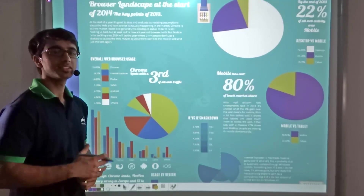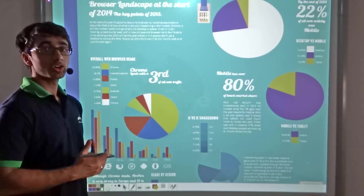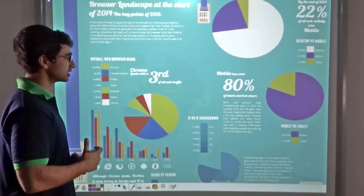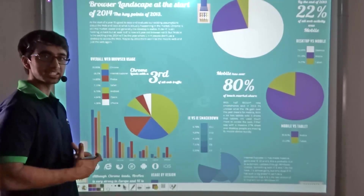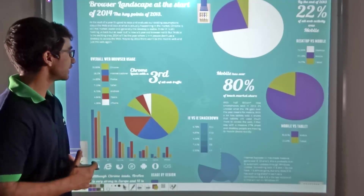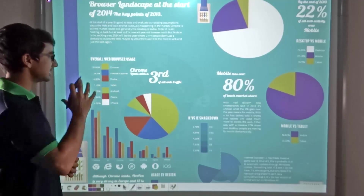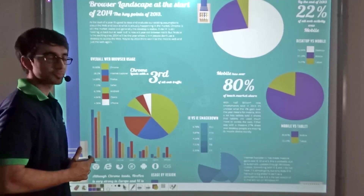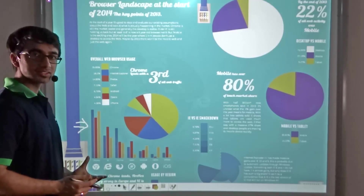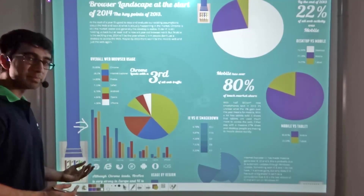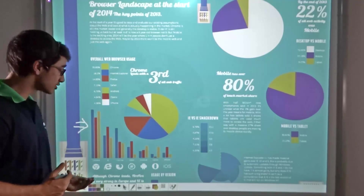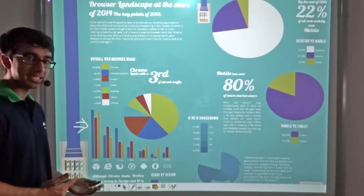Every day in the newspaper, books, or even on the internet, you might come across certain figures or structures that represent data in a very attractive manner. If you take a look at the picture on the screen, you will find that some data has been represented in a pictorial manner. For example, consider this picture — here, the data of how many people across Europe, USA, and the rest of the world use different browsers of the internet are given.